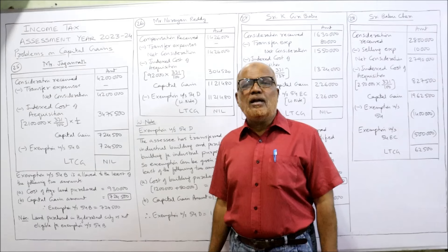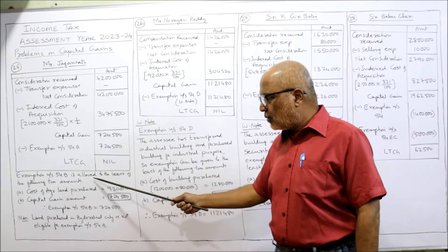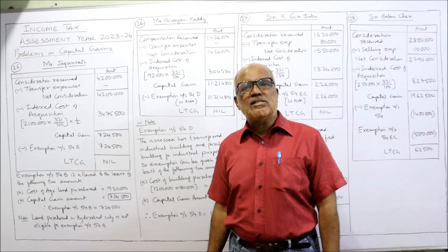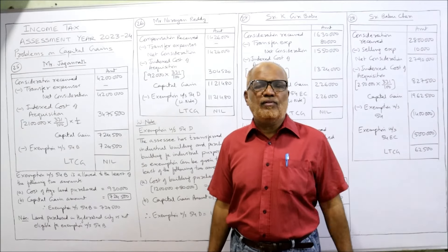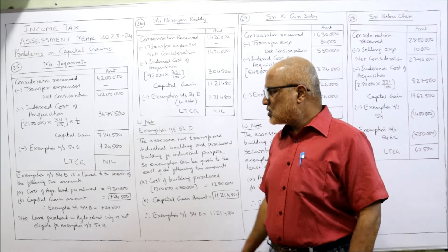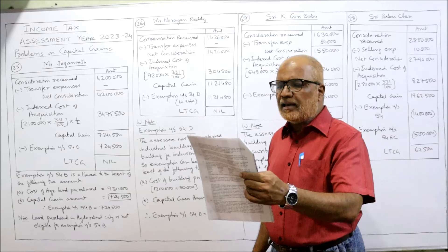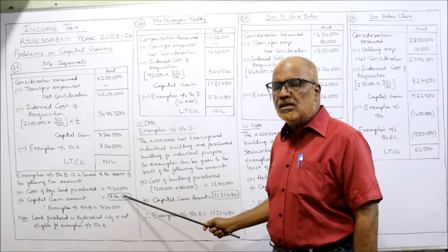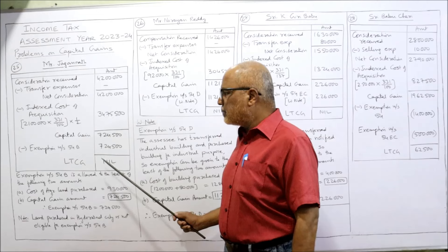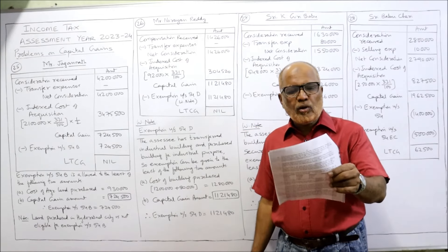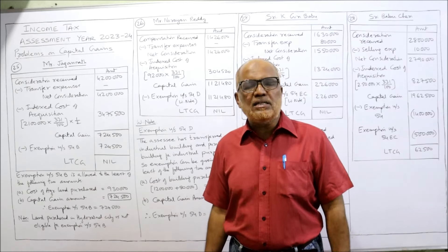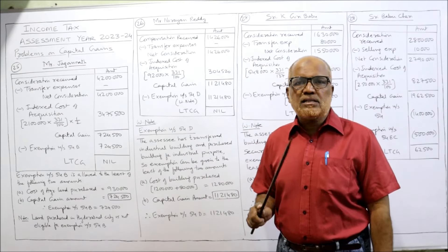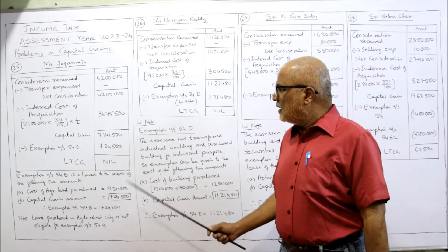Now we'll give the exemption under section 54B, which is allowed to the least of the following two. The assessee has sold one agriculture land and purchased another agriculture land. Cost of the new land purchased: 9,30,000. Capital gain amount: 7,24,500. Whichever is least — 7,24,500 is the exemption. So LTCG will be nil. Note: the land purchased in Hyderabad city is not eligible for exemption under section 54B because only agricultural land purchases qualify.